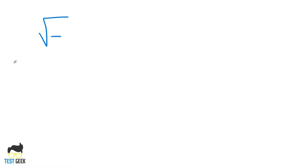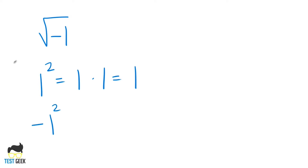One example of this would be the square root of negative one. If you think about it, the square of any real number is positive. The square of one is one because it's one times one. Same thing goes for the square of negative one — negative one times negative one again gives us a positive. Anytime we square something, we end up with a positive.